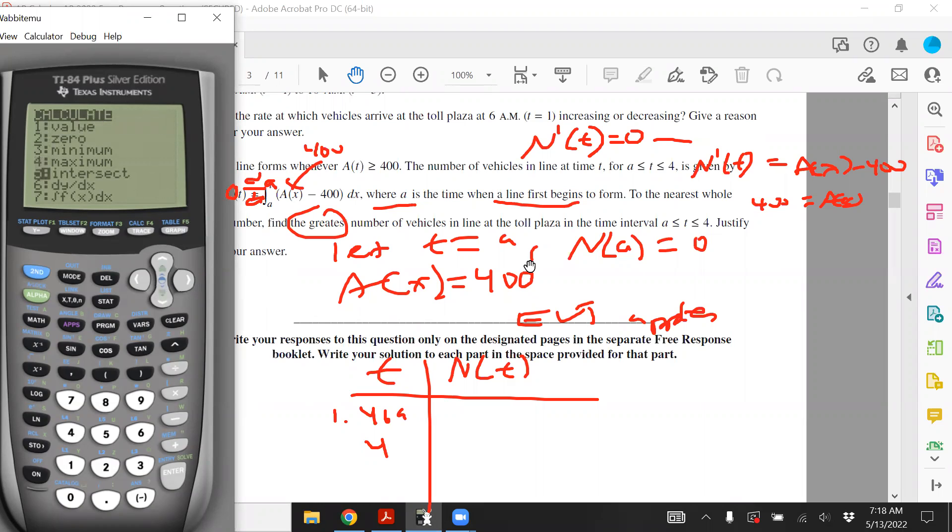Because that is going to be a critical point. Because it's going to make N'(T), and that's when we have extreme values when the derivative equals 0. We're trying to evaluate. 3.598. Okay, there we go.